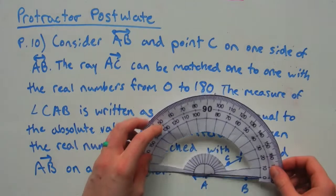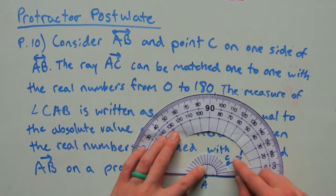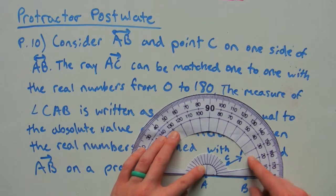So, for example, we would line our protractor up with ray AB and then measure the C which looks like it's roughly 30 degrees.